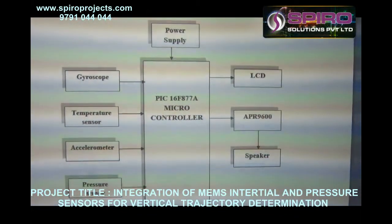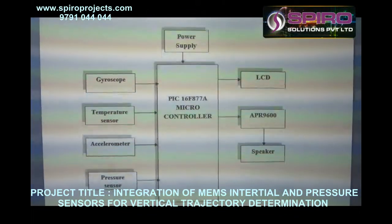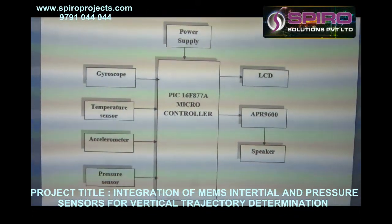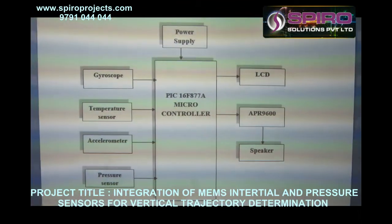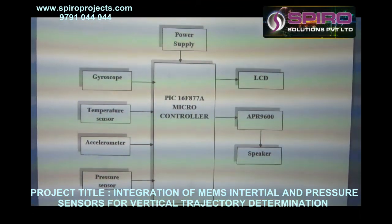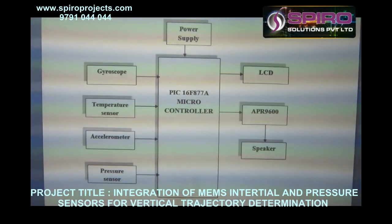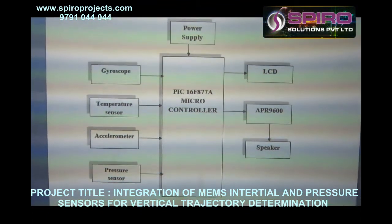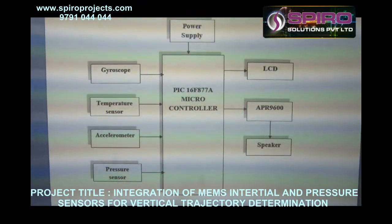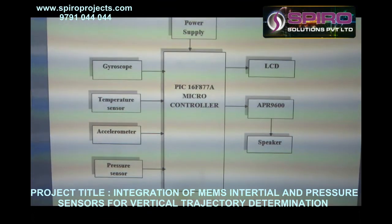Here we use some sensors: gyroscope, temperature, accelerometer, and pressure. With the help of these sensors, we monitor the person, that is the mountain climber. Here we use the APR audio playback register. With the help of the audio playback register, it gives an alert in voice form whenever an abnormal reading occurs in any parameter, such as temperature or accelerometer.